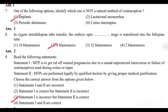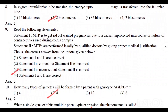Question number 8: ZIFT — Zygote Intra Fallopian Tube Transfer. The embryo up to a certain stage is transferred into the fallopian tube. Option 2 — 8 blastomeres — is the correct answer.